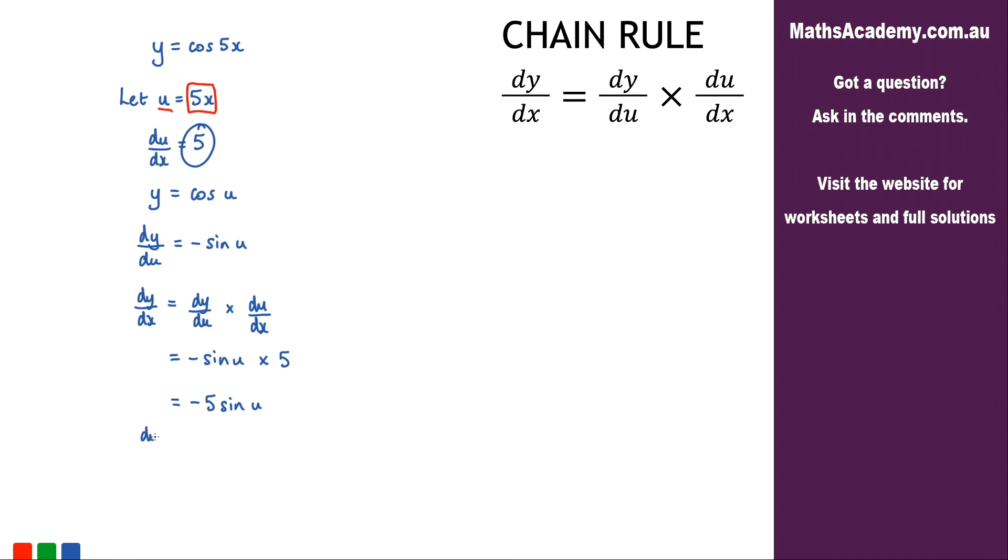So dy by dx is equal to negative 5 sine of 5x.